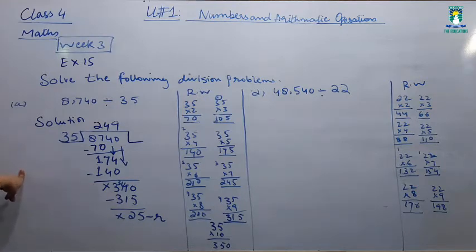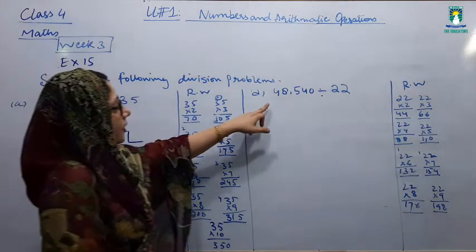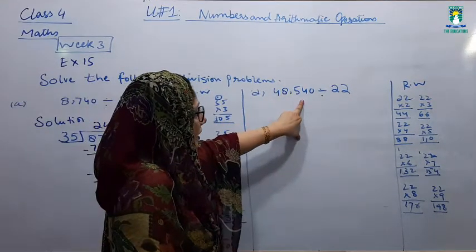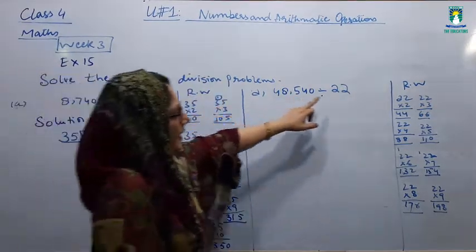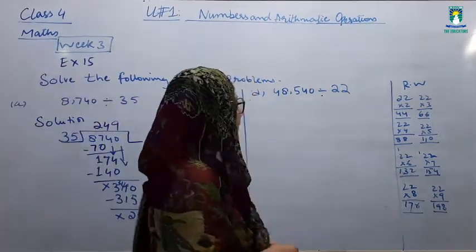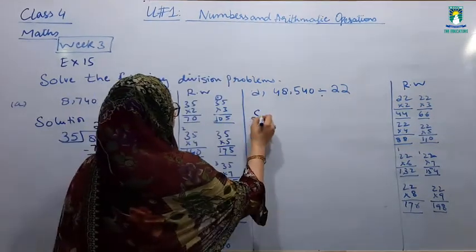Okay, one more question is in exercise 15. I will solve it. The question is 48,540 is going to divide with 22. The same process. First of all, we have 22 table and we have a question.